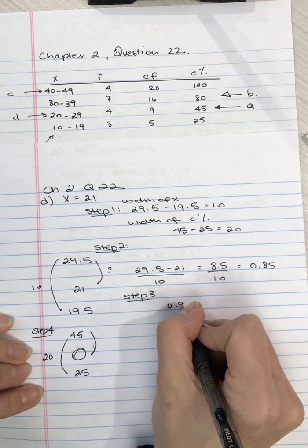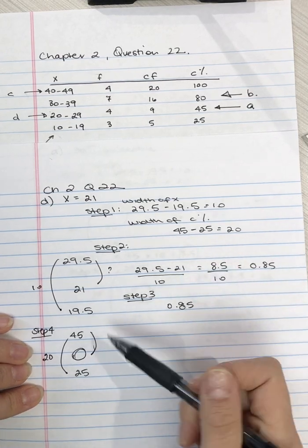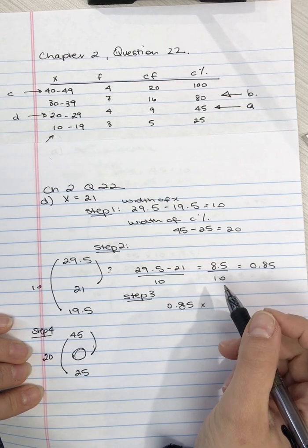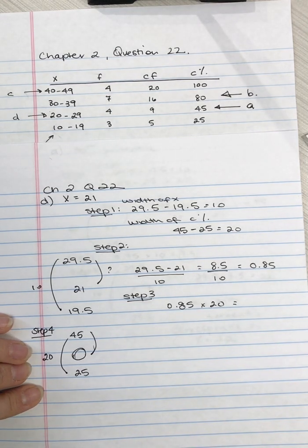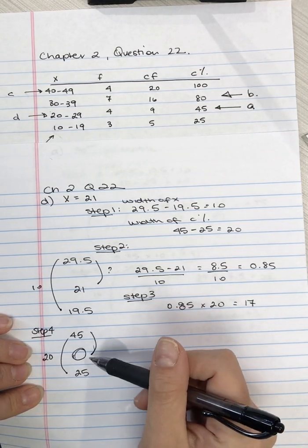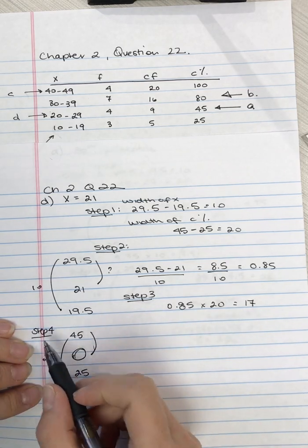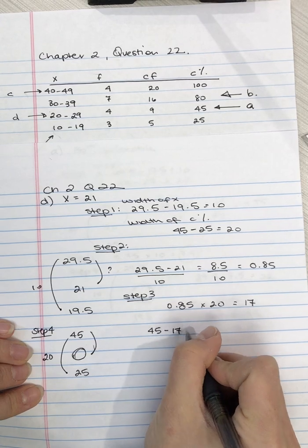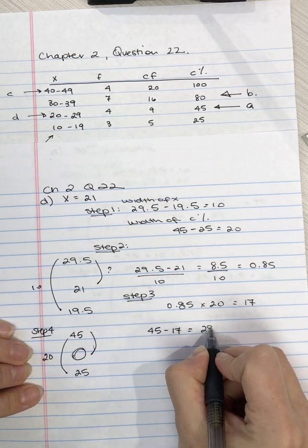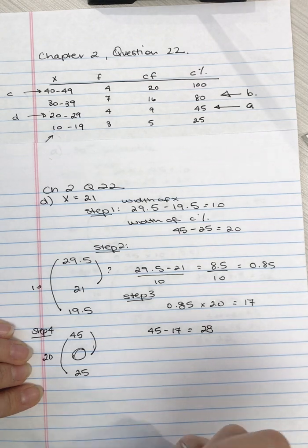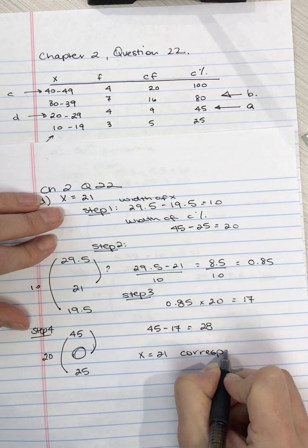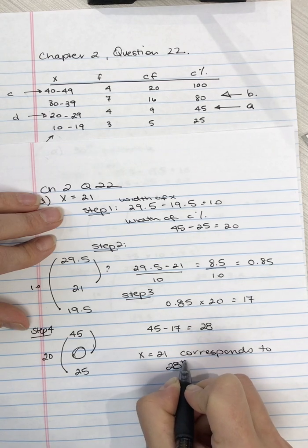So what we're going to do is, we're going to take 0.85. So we have to go 85% of the width of 20 down from 45 to get to that score. So we're going to take 0.85 and multiply it by 20. And that gives us 17. So we have to go down 17 steps from 45. So in step 4, what we're going to do is, we take 45, subtract 17, and that gives us 28. And so our conclusion is that x equals 21 corresponds to the 28th percentile.